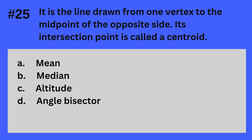Question 25. It is the line drawn from one vertex to the midpoint of the opposite side. Its intersection point is called a centroid. A. Mean. B. Median. C. Altitude. D. Angle bisector. The answer? It's B. Median. It is the line drawn from one vertex to the midpoint of the opposite side, and its intersection point is called a centroid — Median.